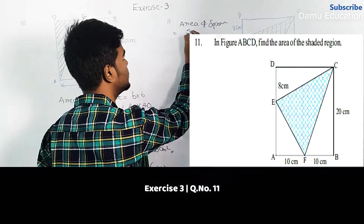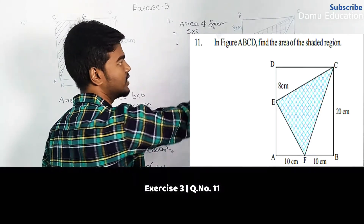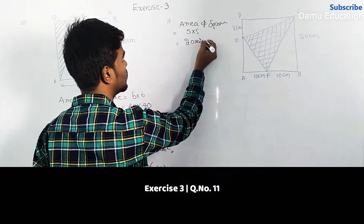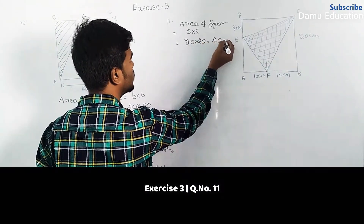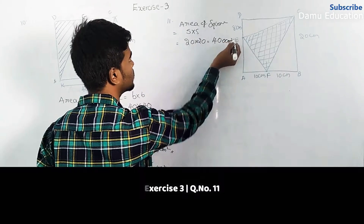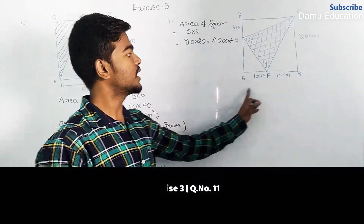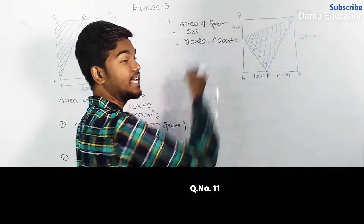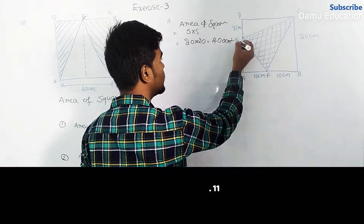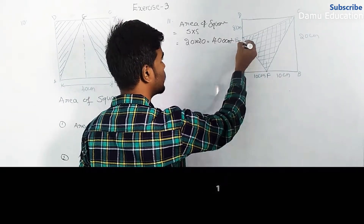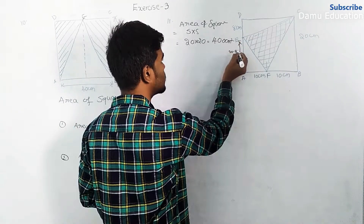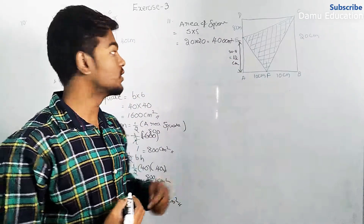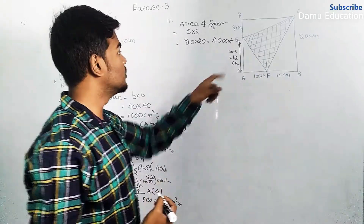Area of square equals side into side — the side is 20 centimeter, so 20 into 20 equals 400 centimeter square. Here, 10 plus 10 equals 20. They have given 8 centimeter for one segment, so the remaining part from E to the other point is 20 minus 8 equals 12 centimeter.